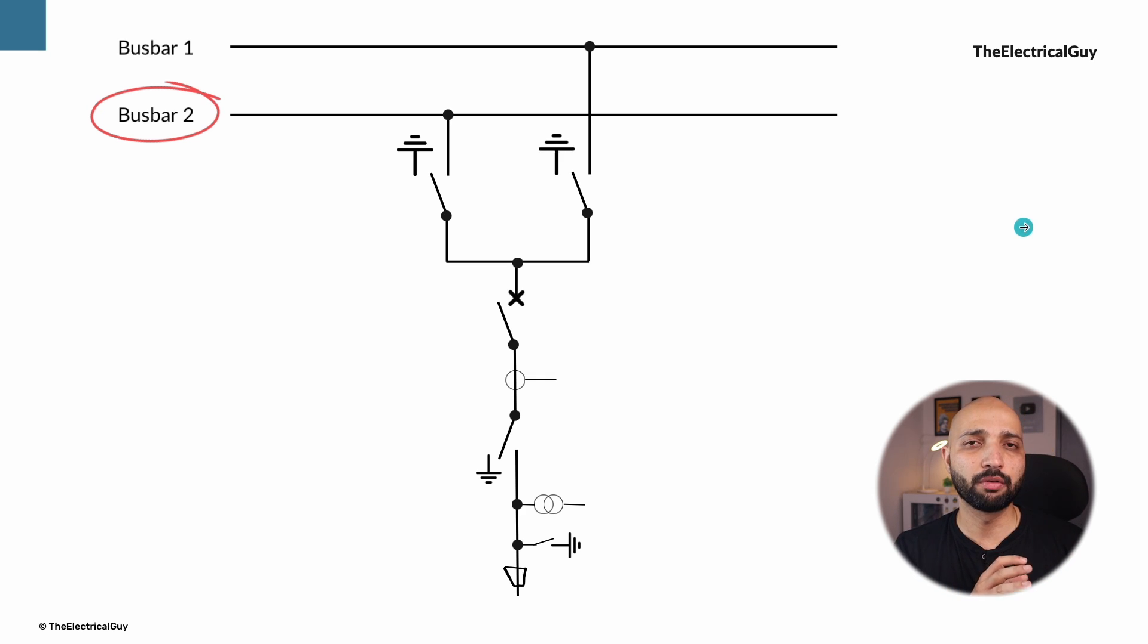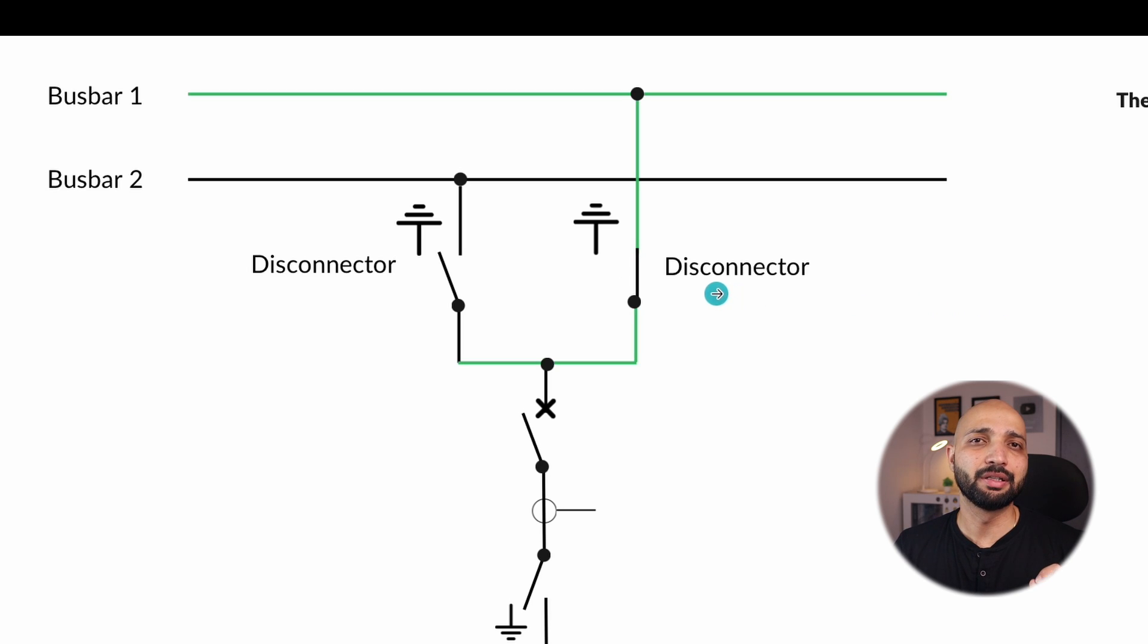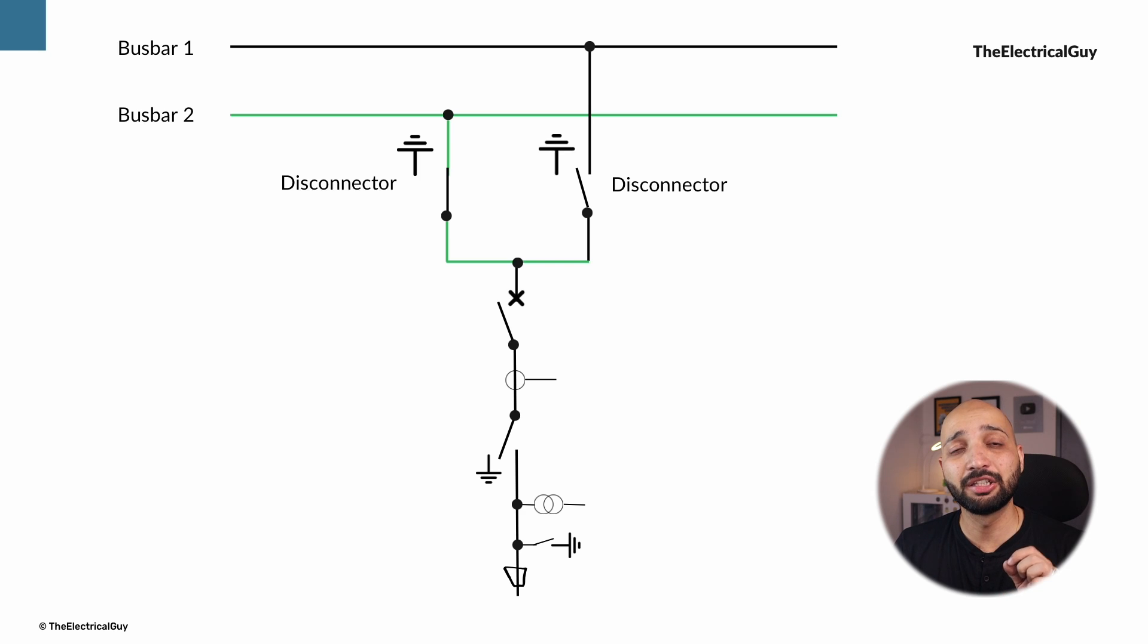Now to connect the bus bar to our switchgear we have used a disconnector with earth switch. The purpose of this disconnector is to disconnect a particular part during maintenance and also it serves a very important function, that is rerouting of the power. When bus bar 1 is active this disconnector is in closed condition, and if bus bar 1 fails then we can simply open this disconnector and close the other disconnector. In this way we have shifted from bus bar 1 to bus bar 2, which is nothing but rerouting of the power. In GIS this disconnector is basically a three position switch.